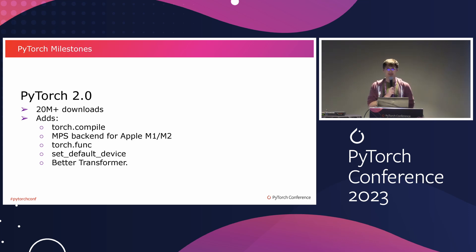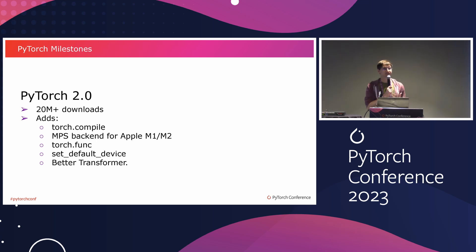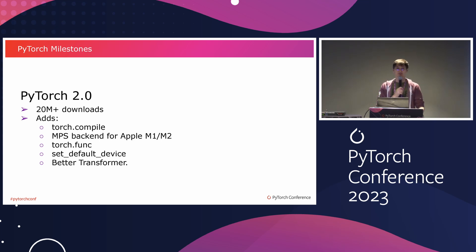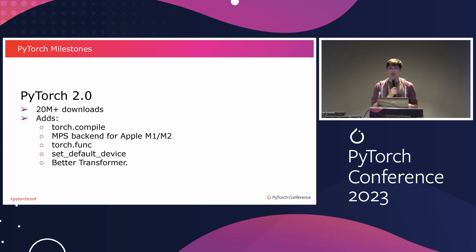Set default device — which I don't know if many of you are familiar with — is about changing what the default device is when you build your PyTorch model. It can help significantly speed up initialization by directly initializing on device, or as you've seen in some keynote examples, you can use the meta device, which is a fake device with no data, to skip the initialization of your model altogether, and then just load your weights, avoiding unnecessary memory use and initialization.